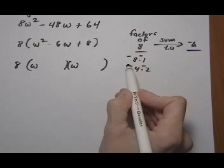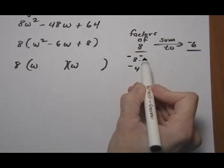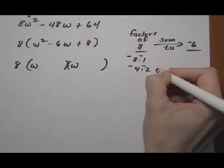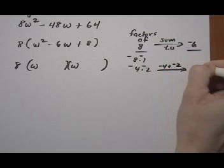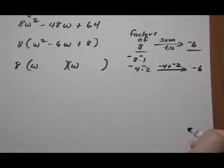And now we just look to see what they sum to. Minus 8 plus minus 1 is minus 9. That doesn't work. But this one does. Minus 4 plus minus 2 gives us minus 6. So that's the one we want to use.